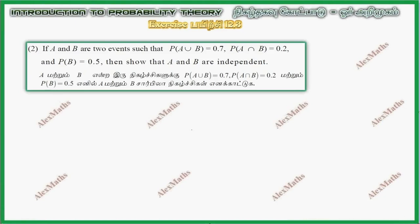Hi students, this is Alex here. Exercise 12.3, question number 2: If A and B are two events such that P(A union B) = 0.7, P(A intersection B) = 0.2, and P(B) = 0.5, then show that A and B are independent.